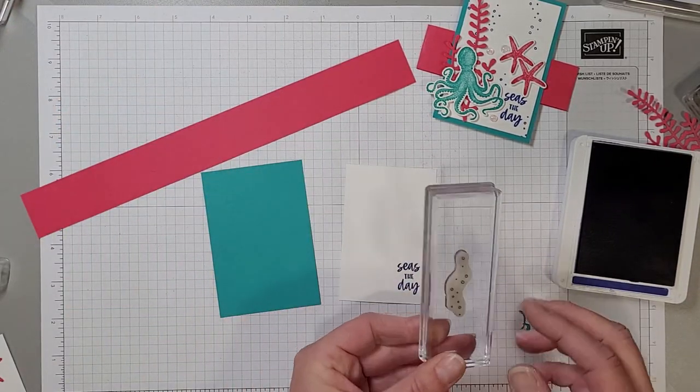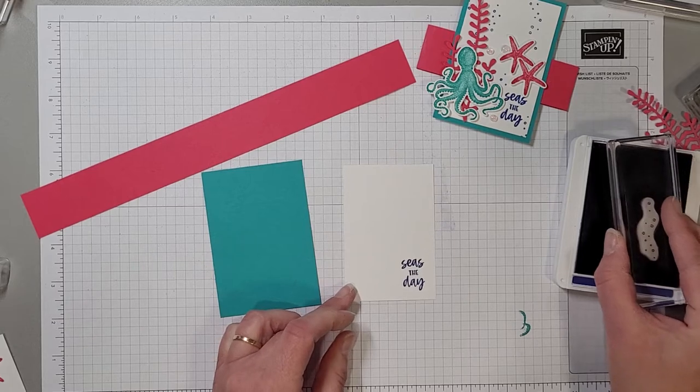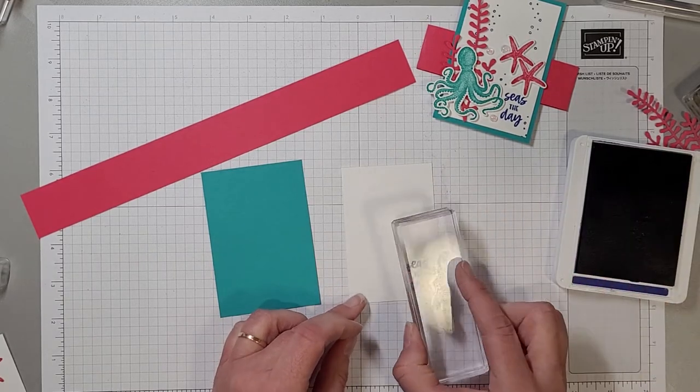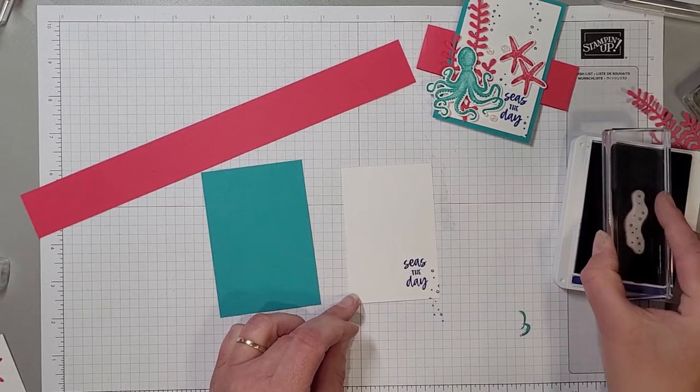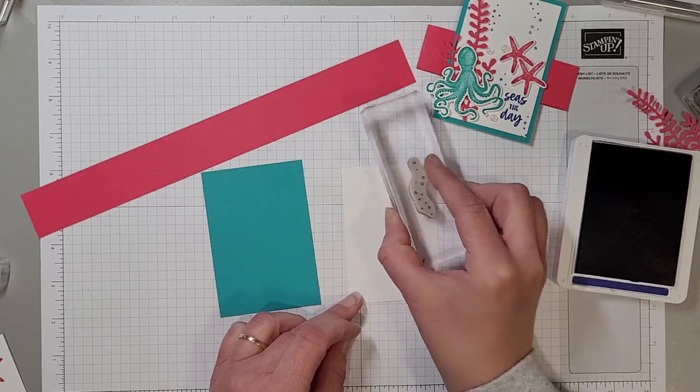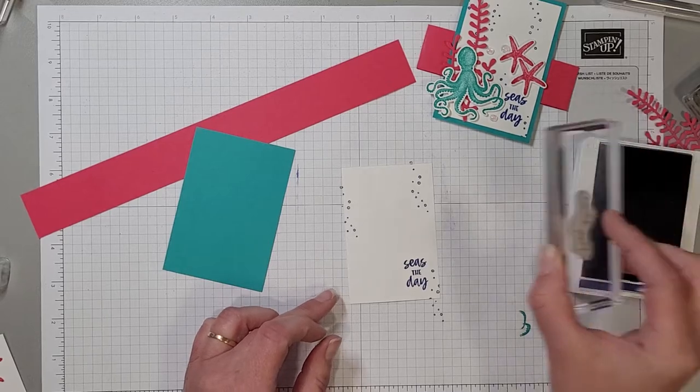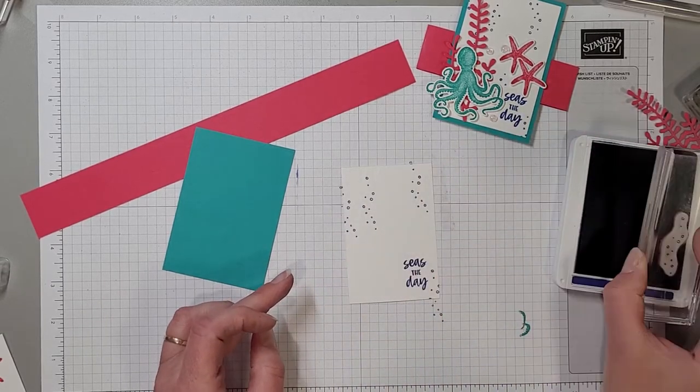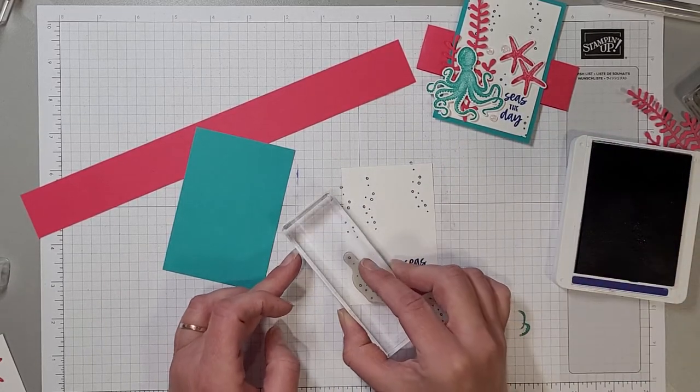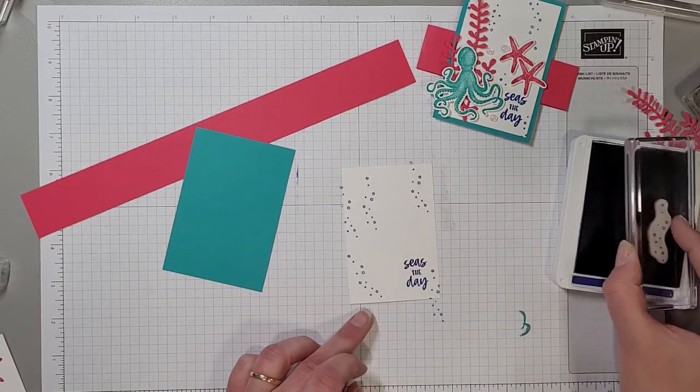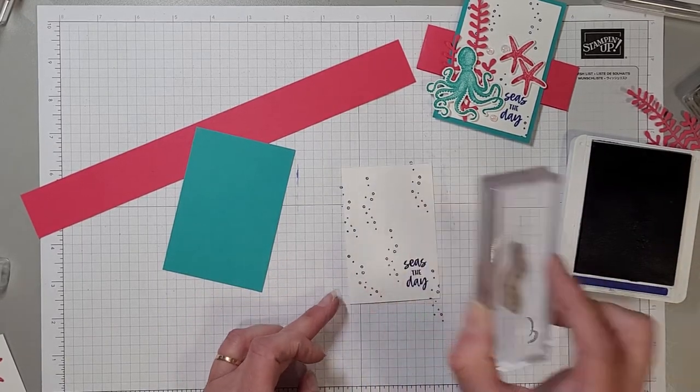So we've got that and then we'll take our little bubbles, these are absolutely adorable. We're going to just stamp a few of those randomly and I'm pressing very lightly so I get a nice image.